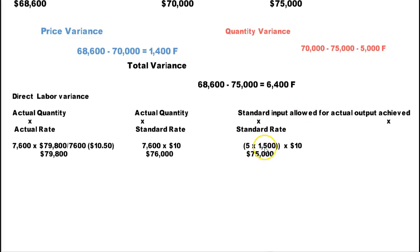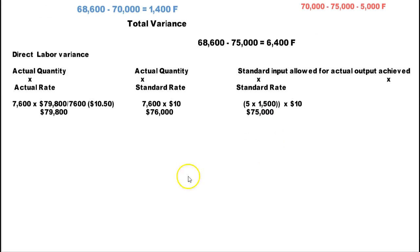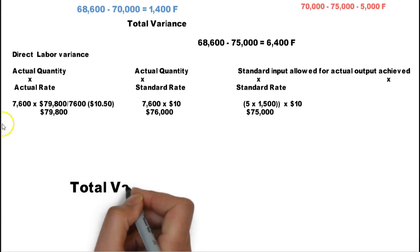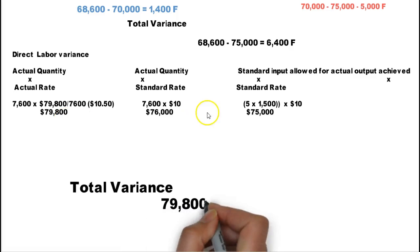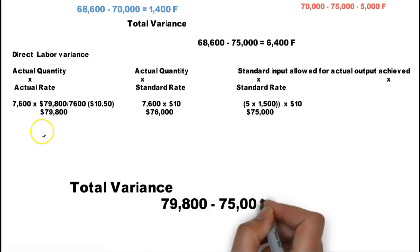But the standard input allowed: we had 5 hours to produce each one of those curtains, and we produced 1,500 curtains. We have to multiply that by $10, we get $75,000. So the total variance is the actual times actual minus the standard times standard. And this time, the left is greater than the right, so therefore it's unfavorable.